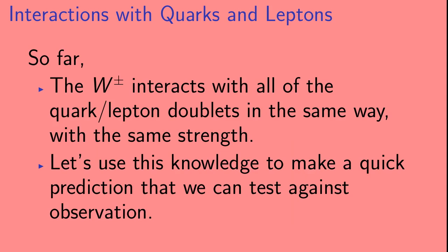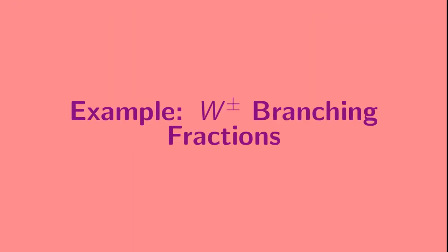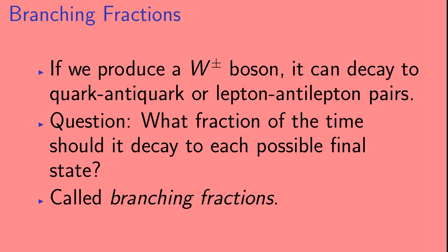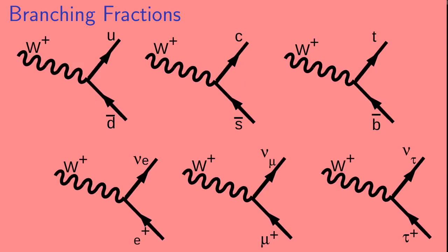Okay, so, so far we've seen that the W interacts with all of the quark and lepton doublets in the same way, and also with the same strength. Let's use this knowledge to make a quick prediction that we can test against observation. So, let's look at something called the branching fractions of the W. If we produce a W boson, it can decay to quark-antiquark or lepton-antilepton pairs. So, let's ask a question. What fraction of the time should it decay to each possible final state? These fractions are called branching fractions.